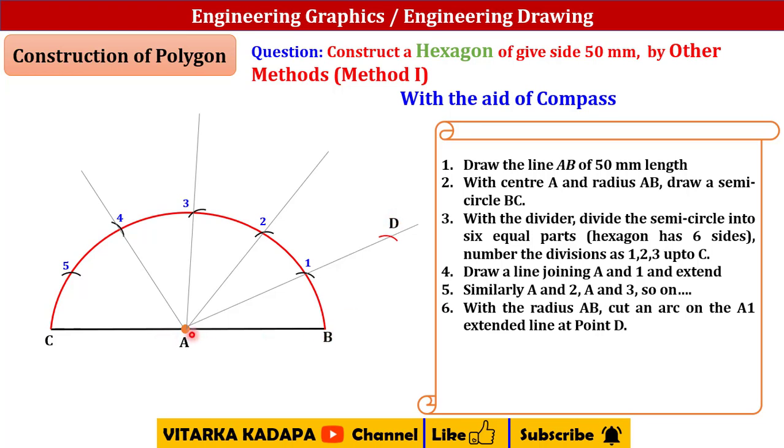Now with the same radius AB, keep D as a center, mark a point on A2 line like this. With the same radius, with E as a center, mark a point on third line F. With F as a center, we already have got a point here, we will mark it G.